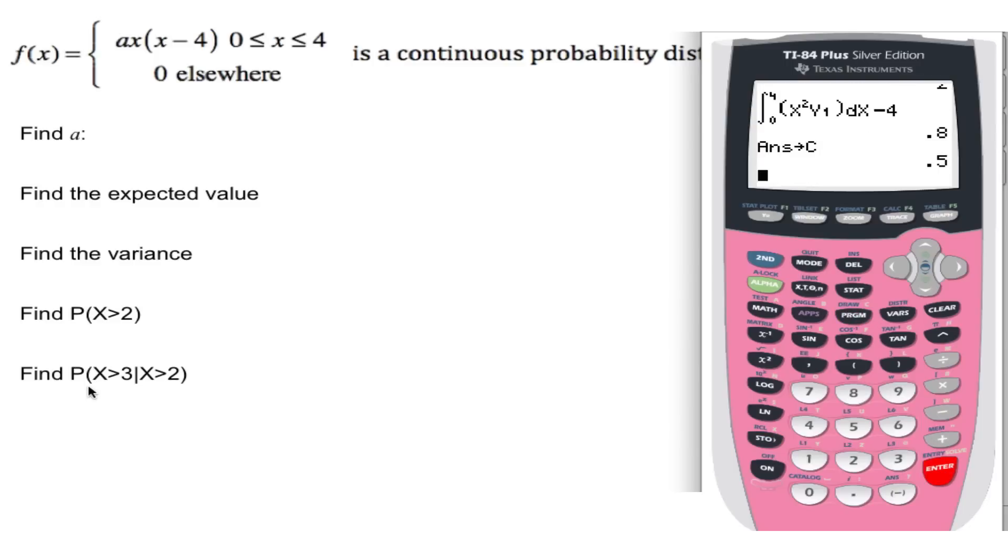Now it says to find the probability of greater than 3, given greater than 2. So my denominator, just pretend this vertical line is like a denominator. My denominator is the probability of greater than 2. We know the probability of greater than 2 is 0.5. So let's go find out what the probability of greater than 3 is, given it's greater than 2. Second, actually I can just do this. Math.